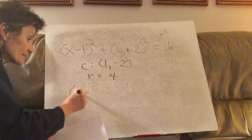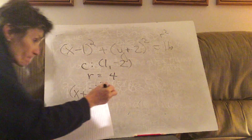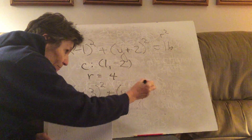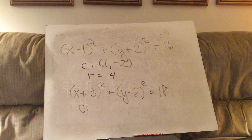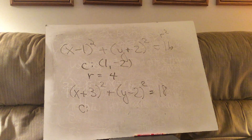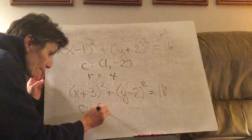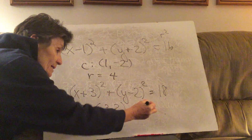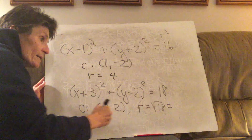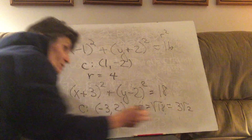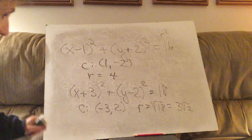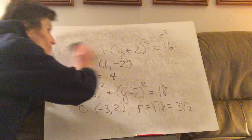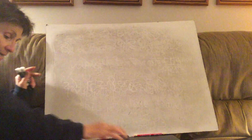Problem b works exactly the same way. The center is at (-3, 2) and the radius is the square root of 18, which we write as 3√2 because we always simplify radicals whenever possible.